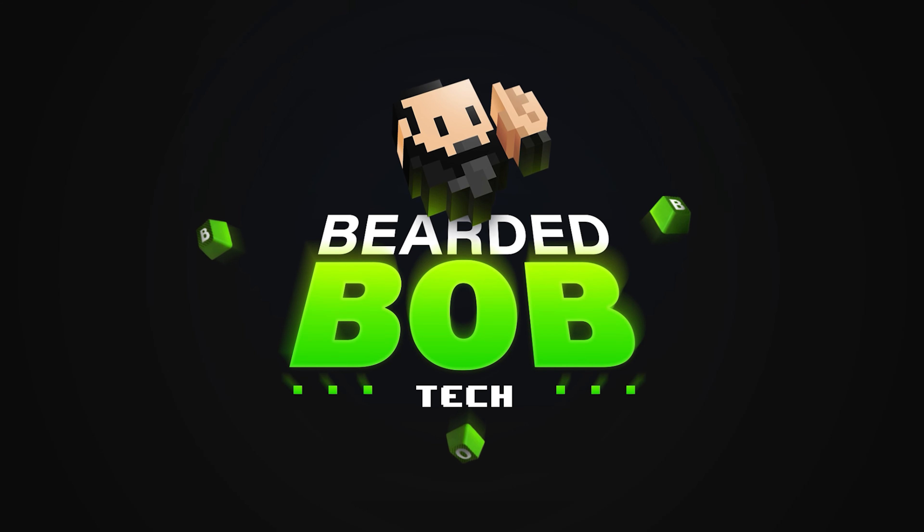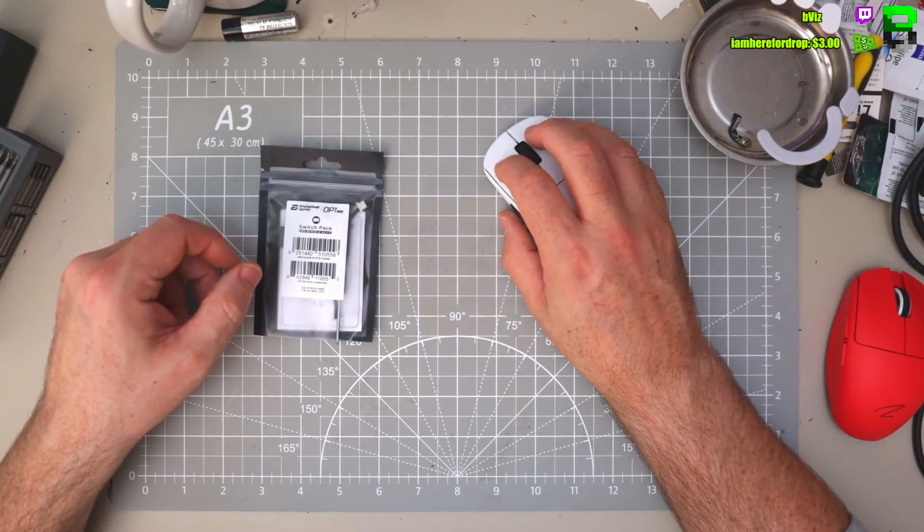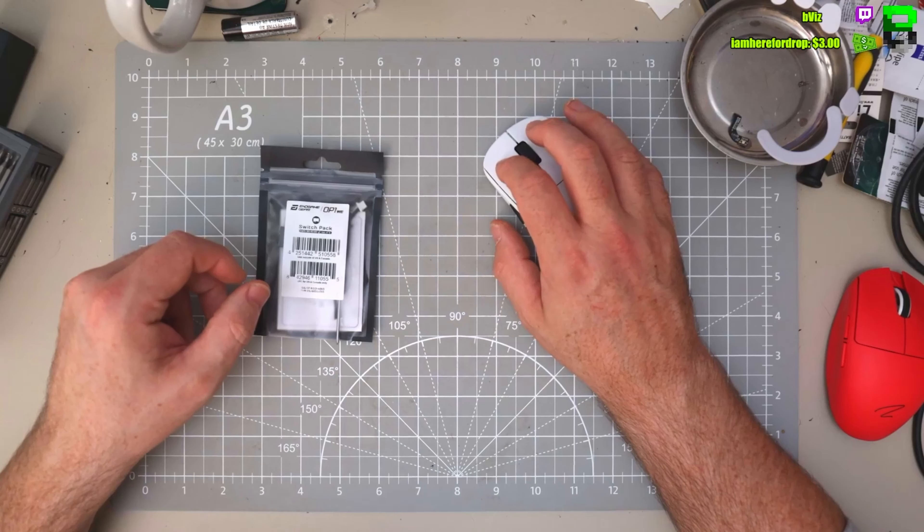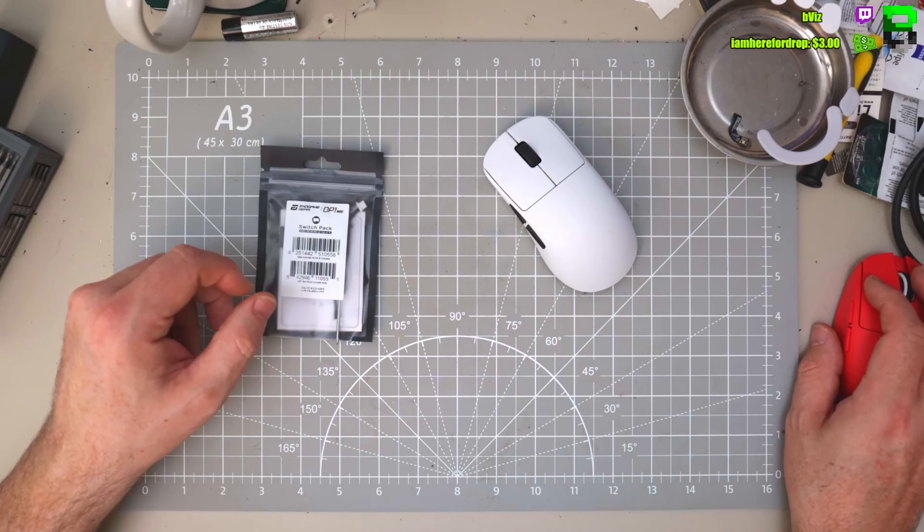So what we've got is the OP1 WE from Endgame Gear and then we've got the lighter switch pack that they also provide. You can now buy it, which is good - this is the official pack. Now we're going to be able to change the heavier switches for the lighter version. One complaint I think most people have with this mouse is the heaviness of the switches, so hopefully now we can easily tweak it should you want to.